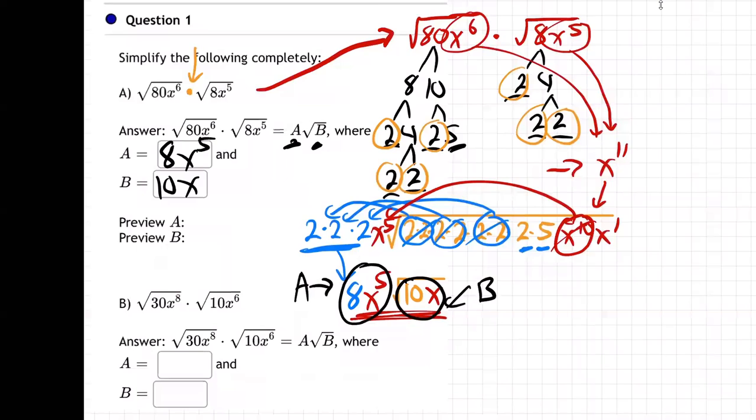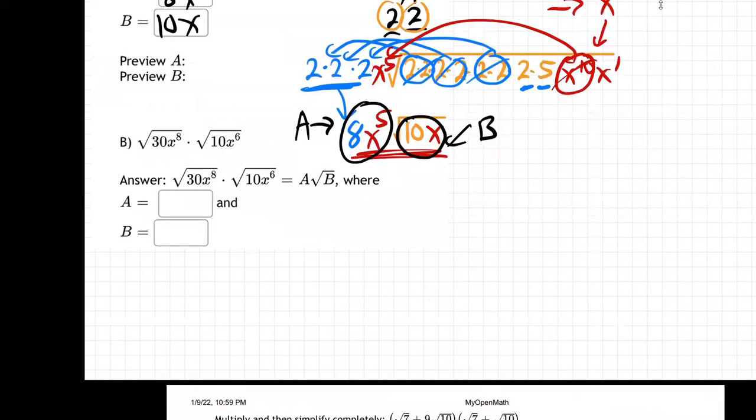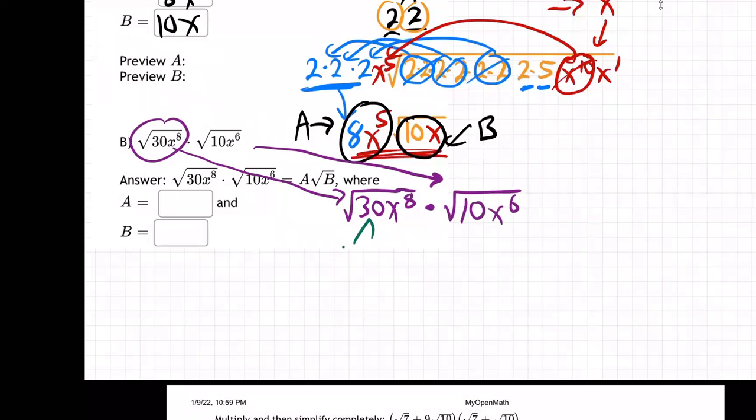Let's do part two now. Part two is going to be the same kind of thing. Let's bring it over here. This guy. Square root of 30x times square root of 10x to the sixth. Okay. Same thing again. Here we go. Break down the 30. That would be five times six. Well, I'll just do three times 10. Whatever. Five times six, three times 10, two times 15. Whatever you want to do.